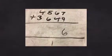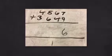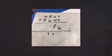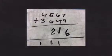7 add 9 equals 16, so you put the 6 in the unit column and the 1 in the tens column. 6 add 4 equals 10, and you add the 1 to make 11. 5 add 6 equals 11, add the 1 to make 12.